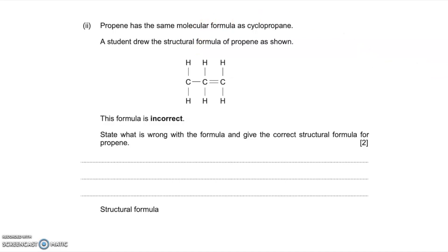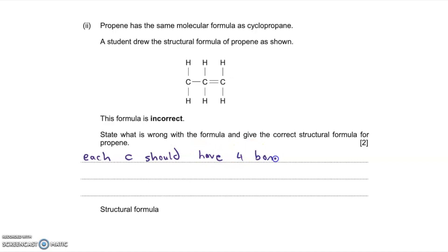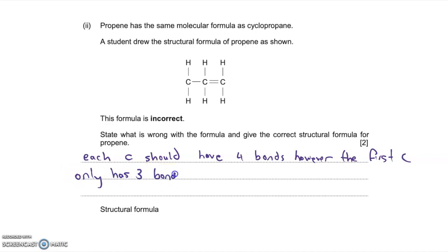The final part of this question focuses on propene. A student has drawn the structural formula of propene incorrectly, and the question asks what's wrong with the formula. To identify the error you have to look at the number of bonds each carbon has — carbon should have four bonds. If you look closely at the incorrect structure, the first carbon has only three bonds and the middle carbon has five bonds. Spotting either of those gets you a mark.